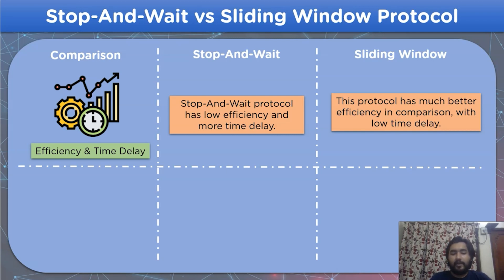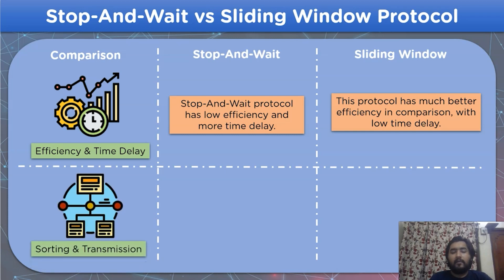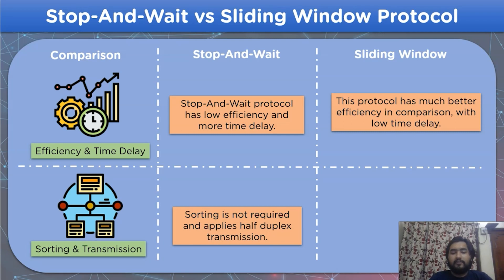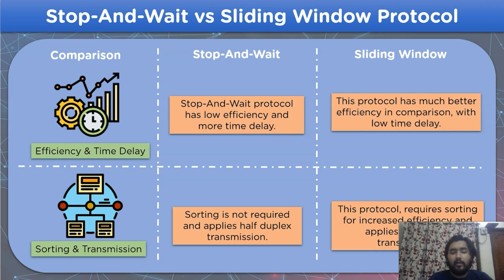Let's move on to the last comparison: sorting and transmission of data. For stop-and-wait protocol, sorting is not required and it applies a half-duplex system for data transmission. As for sliding window protocol, sorting is required for better efficiency and it is full-duplex in nature.